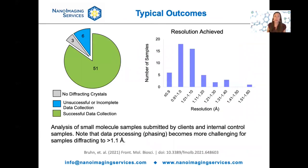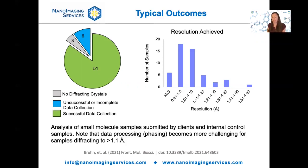Of the 60 compounds we looked at, 51 produced data expected to be suitable for structure solution. In three cases, we were not able to find any diffracting crystals, likely because the sample was amorphous — and in those three cases, the client had not performed x-ray powder diffraction before submitting. In another six cases, we were unable to get enough data to solve the structure even though we did find diffracting crystals. The majority of crystals diffracted better than 1.1 angstroms, which is important because that's approximately the point at which phasing by ab initio methods becomes much more challenging. In small molecule crystallography, we rely heavily on very accurate bond lengths to accurately assign atom types, so high-resolution data is critical for a high-confidence model.